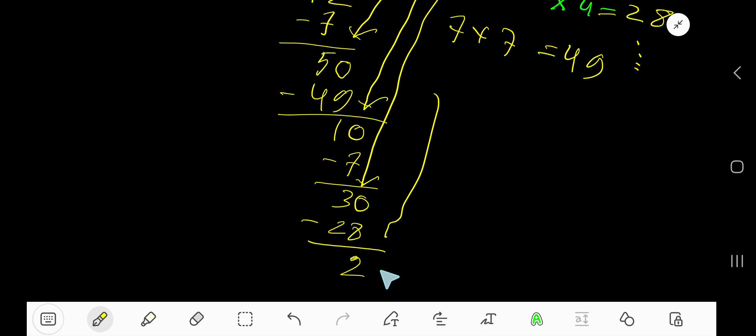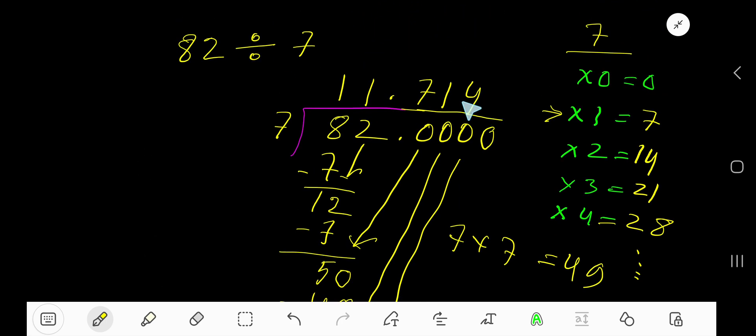You can write more zeros and bring down that zero here, but since you have got three places after the decimal, you can now stop. So your answer is 11.7, or approximately 11.714.